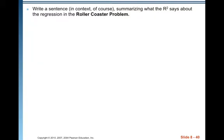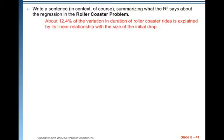Write a sentence in context, of course, summarizing what R-squared says about the regression line in the rollercoaster problem. About 12.4% of the variation in duration of rollercoaster rides is explained by its linear relationship with the size of the initial drop. So about R-squared percent of the variation in the duration of the Y values is explained by its linear relationship with the X values. And that is kind of your template for explaining R-squared.